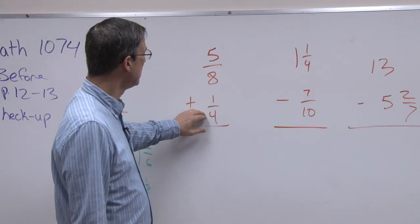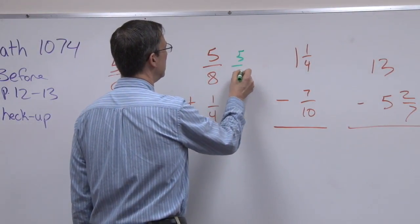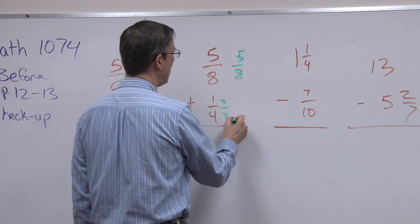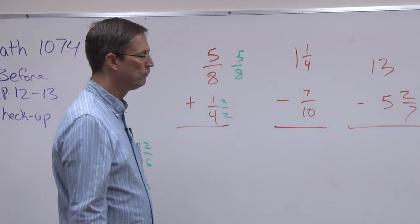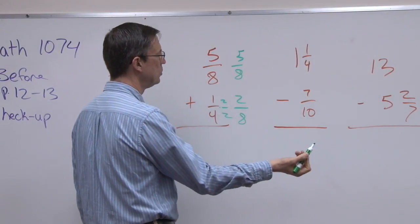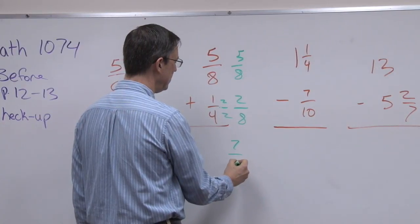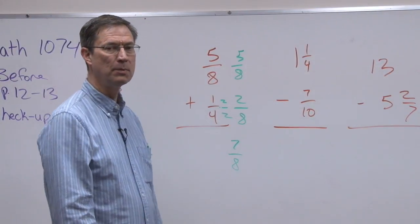So I only need to change this one, and I can keep this one as 5/8 multiplied by 2 over 2. So I get a denominator of 8, numerator of 2, and now I can add 5 plus 2 is 7/8. So that one's easy.